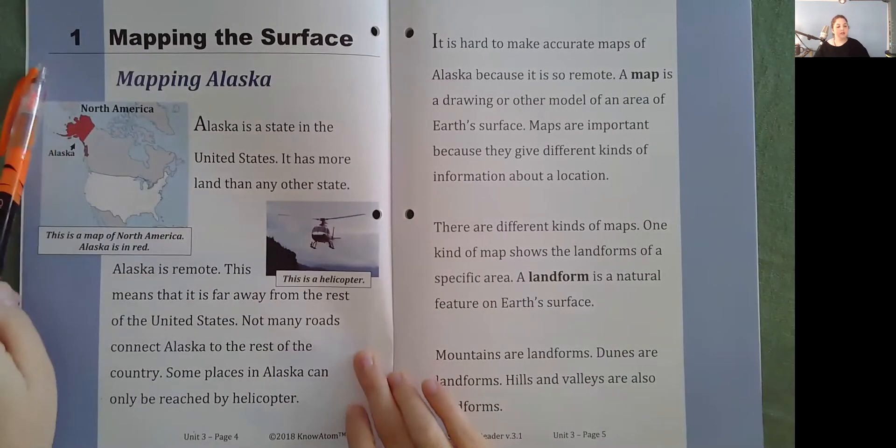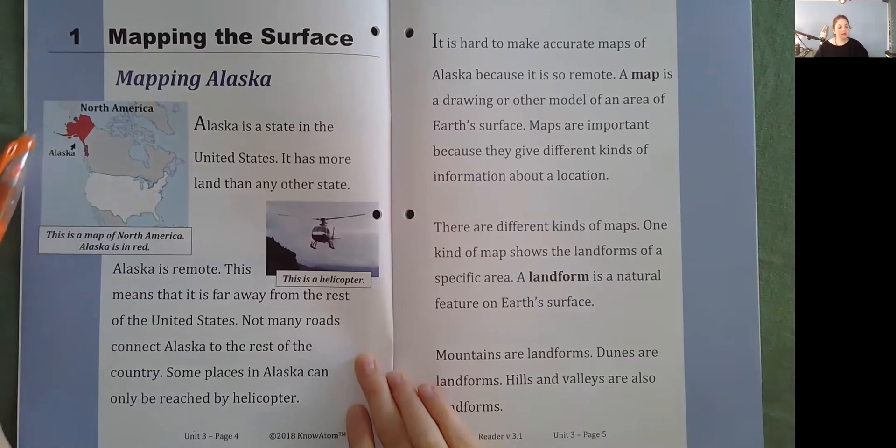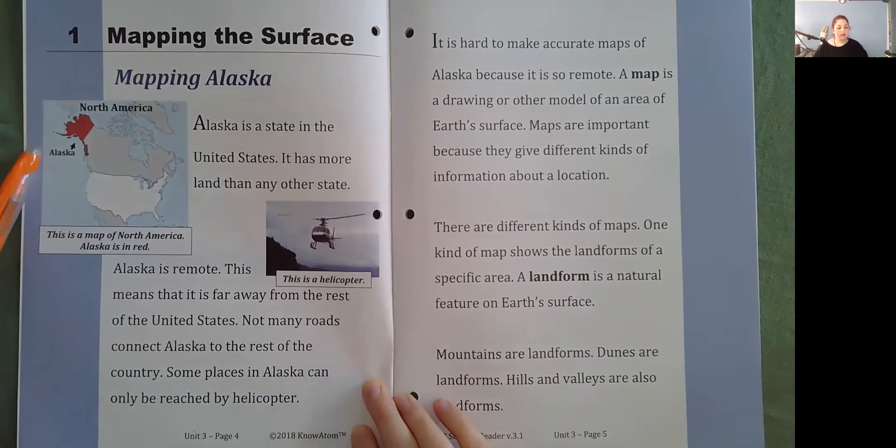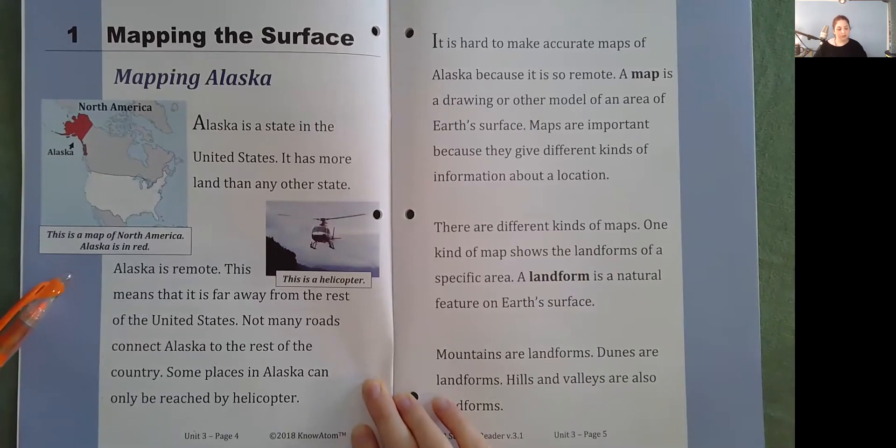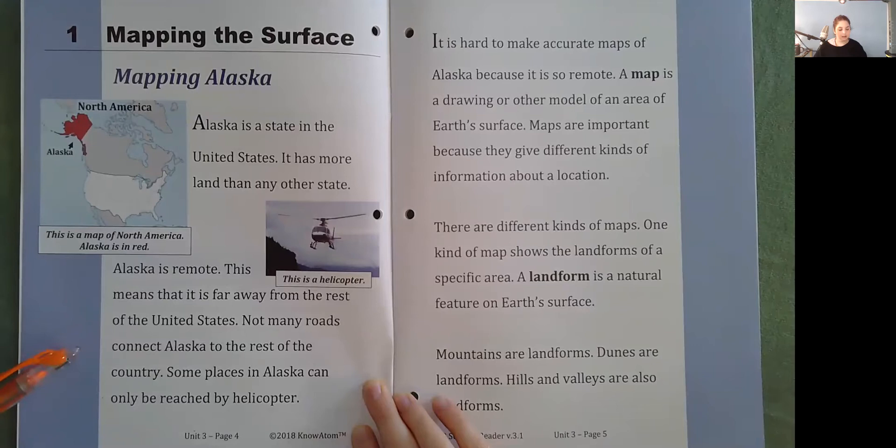Mapping the surface. Mapping Alaska. Alaska is a state in the United States. It is more land than any other state. Alaska is remote. This means that it is far away from the rest of the United States. Not many roads connect Alaska to the rest of the country. Some places in Alaska can only be reached by helicopter. So here's a map of North America, and here's Alaska.